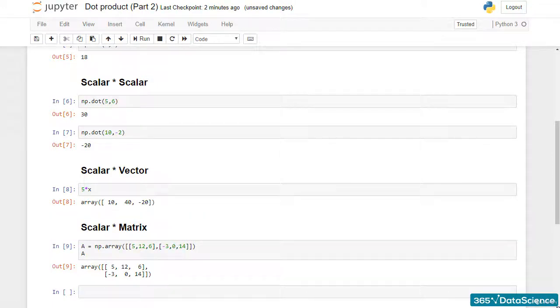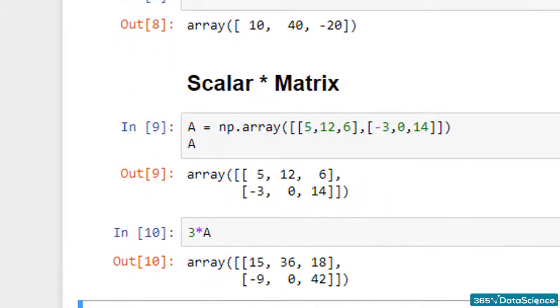If I want to multiply it by 3, we would have a scalar times a matrix situation. Similar to what we saw in the last lesson, the shape of the matrix doesn't change, it just gets scaled. We keep the shape and multiply each element by 3. The result is 15, 36, 18, minus 9, 0, 42. Alright, that's easy.